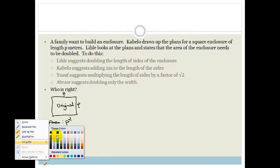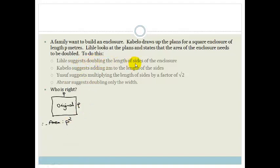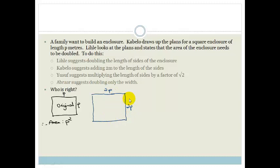Lichler suggests doubling the length of the sides, making them 2p by 2p. That gives an area of 2p × 2p = 4p². That is four times the original area p², not double. So Lichler's suggestion is incorrect.